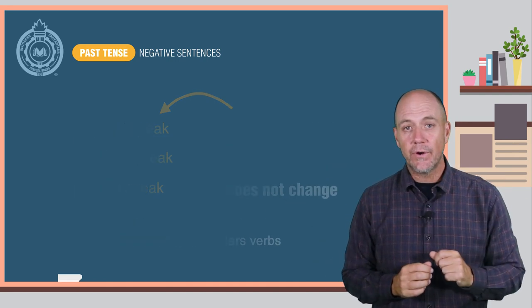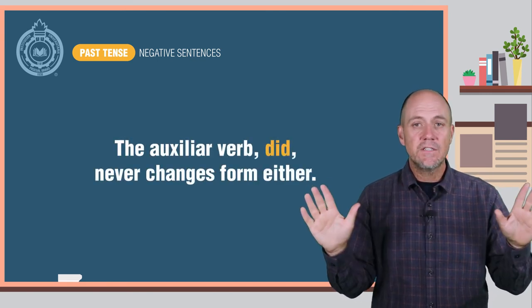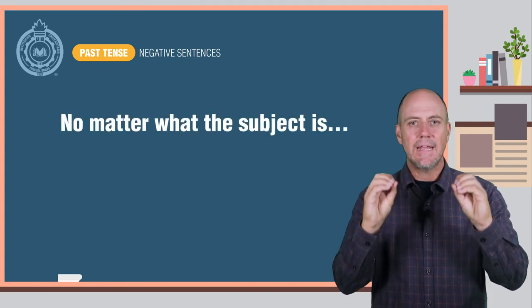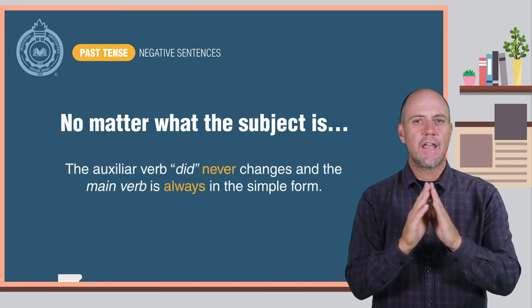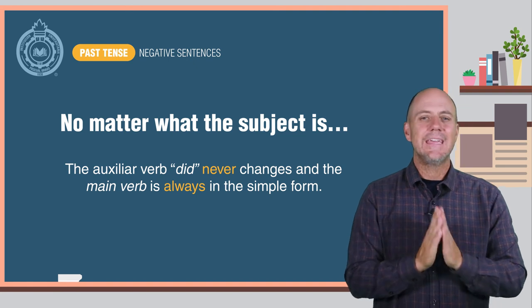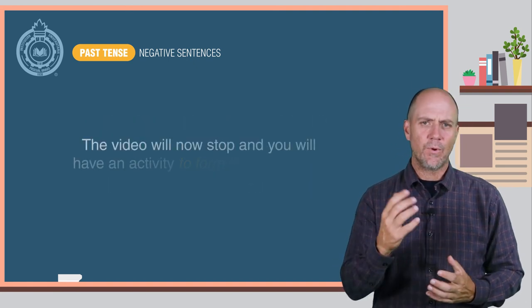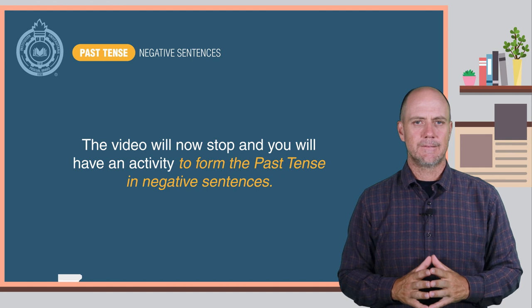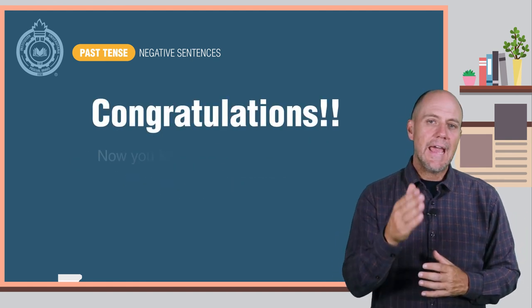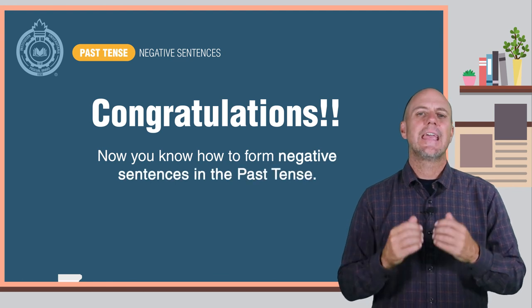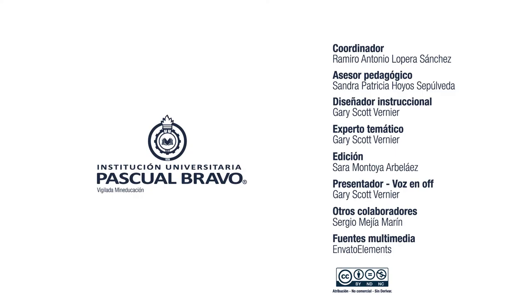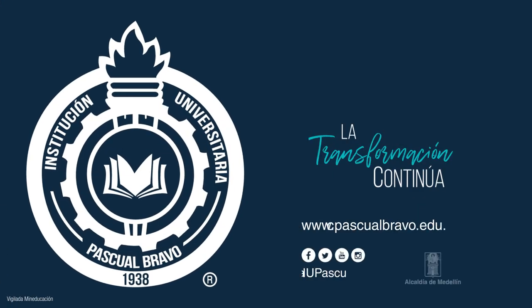I am sure you also noted that the auxiliary verb 'did' never changes form either. No matter what the subject is, in the past tense in negative sentences, the auxiliary verb 'did' never changes, and the main verb is always in the simple form. The video will now stop and you will have an activity to form the past tense in negative sentences. Congratulations! Now you know how to form negative sentences in the past tense. I will see you back here again for the next lesson. Good luck!